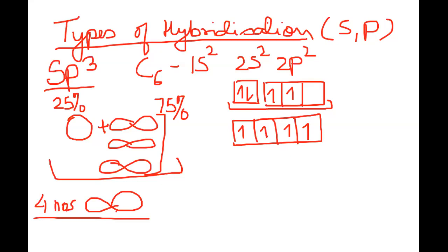It is not always the case that carbon shows sp3 hybridization — it depends on how many s and p orbitals are undergoing intermixing. The three p orbitals themselves are degenerate; hybridization only occurs when another orbital mixes with them. The s orbital is always one per shell. Out of three p orbitals, all three, or two, or one may participate in hybridization.